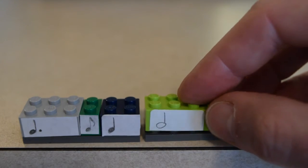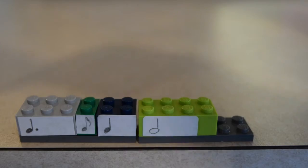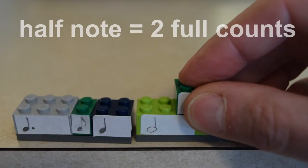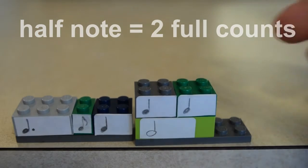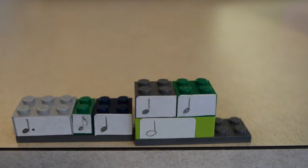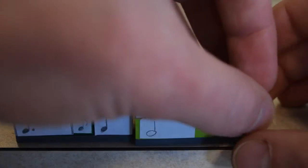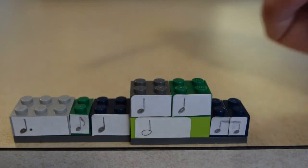In the fourth measure, we start off with a half note, and we're going to represent that there. And I'm actually going to place two quarter notes on top of that to show that we have the full value. When you perform that half note, it has to be two full counts long. You can't cut it short. And that's followed by two eighth notes. So the third and fourth measure go like this.